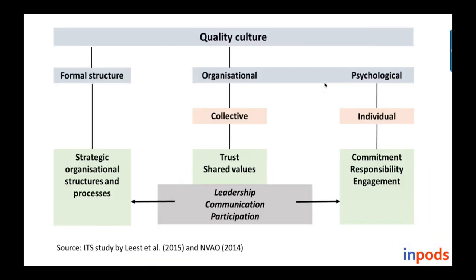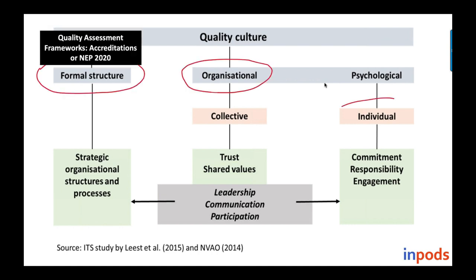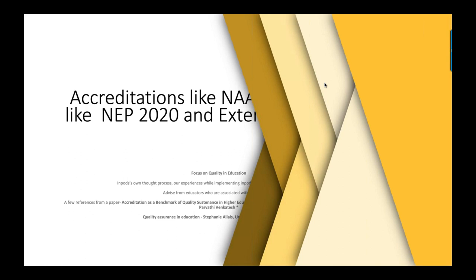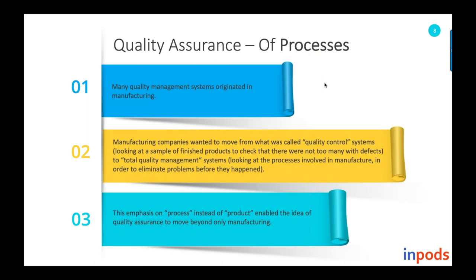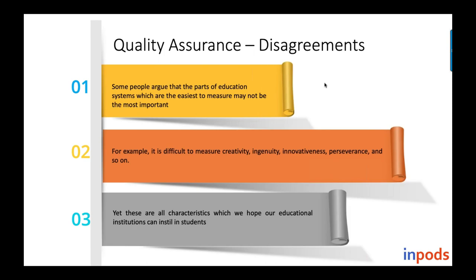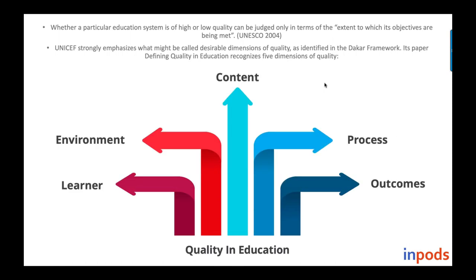Let's quickly recap the points covered yesterday. We discussed the need for establishing a quality culture and drive, and transferring ownership from organizations to individuals to establish that quality culture. We also looked at various references found in accreditation manuals and the National Education Policy, which give very good inputs regarding how quality assurance of educational processes could be achieved.